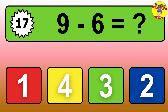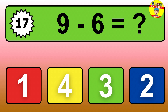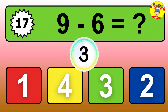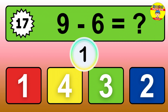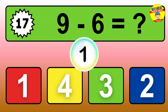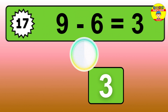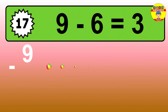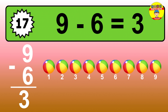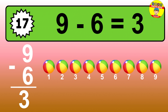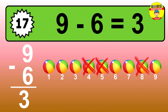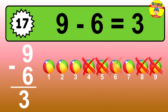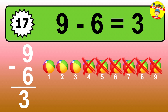Question seventeen: nine minus six equals what? So the answer is, nine minus six is three. Let's count it. One, two, three.